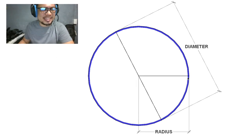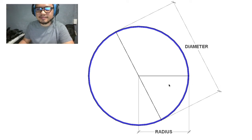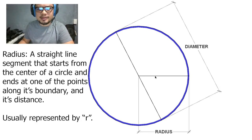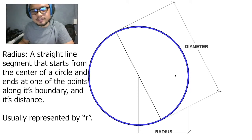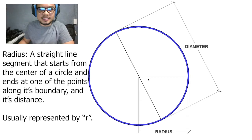If you look on your screen here, we have what's called a circle. Now, if we were to create a line segment that starts from the center of the circle going to one of the points on the outer boundary of the circle, the distance of that line would be called a radius.